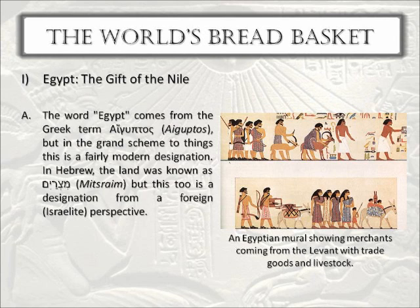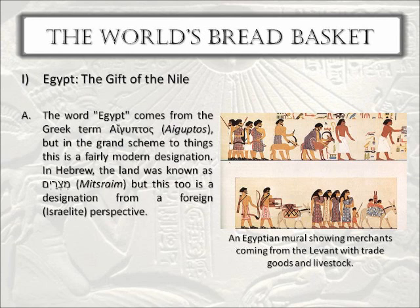This name Mitzrayim comes from Genesis chapter 10, verse 6, in a list of the sons born to the patriarch Ham, who is the second son of Noah. The Israelites would have drawn two conclusions from this name: first, that they are not directly related to the Egyptians except by tracing lineage back to Noah; and second, that the Egyptians were an ancient people group with more history than the Israelites, who only traced their lineage back to Abraham.